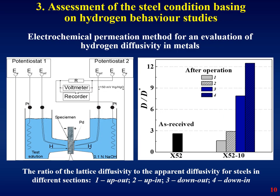Assessment of the steel condition based on hydrogen behavior studies: investigation of hydrogen behavior in steel by hydrogen extraction and permeation methods provides valuable information for assessment of the in-service dissipated damaging degree. The hydrogen permeation method of Devanathan and Stakhursky is used, taking into account that hydrogen in a metal is located mainly in defects, which act as hydrogen traps. Using this method, one can determine intrinsic, latent, and apparent hydrogen diffusion coefficients and their relation as a measure of trapping efficiency.